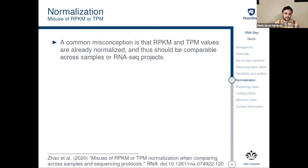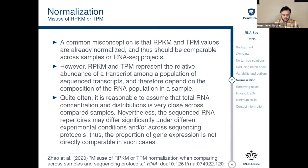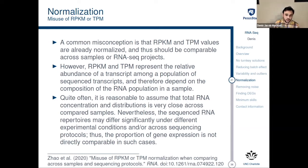A common misconception is that RPKM and TPM values are already normalized and should be compared across samples or RNA-seq projects. However, RPKM and TPM represent the relative abundance of a transcript among the population of sequenced transcripts and therefore depend on the composition of the RNA population in the sample. The sequence RNA repertoires may differ significantly under different experimental conditions or across sequencing protocols, so the proportion of gene expression is not directly comparable in such cases. I recommend reading Zhao et al. 2020 — 'Misuse of RPKM or TPM normalization when comparing across samples and sequencing protocols' — to understand this deeper. This is one of the most common reasons why I reject papers on RNA-seq.